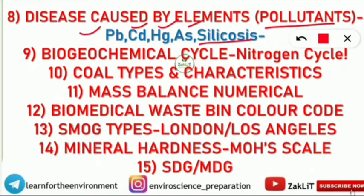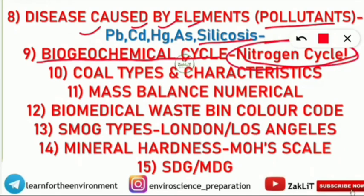Number nine is biogeochemical cycles — nitrogen, carbon, phosphorus, and sulfur cycles. You should know which is a gaseous cycle and which is a sedimentary cycle. The most important one is the nitrogen cycle, for which a separate video has been made. The nitrogen cycle is very, very important.